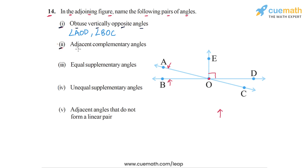In part two, we have to find a pair of adjacent complementary angles. Complementary angles are two angles whose sum is 90 degrees. So we have to find two adjacent angles in this figure whose sum equals 90 degrees, which is quite easy to find — these two angles must sum to 90 degrees.